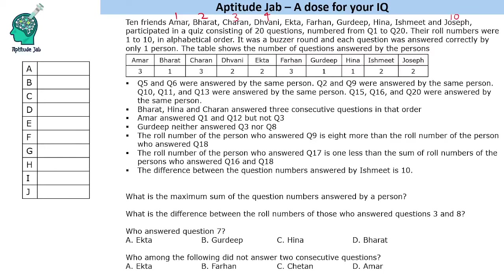Some information is presented: questions 5 and 6 were answered by the same person, 2 and 9 by the same person, and so on. Now, reading these statements, the only information we can directly fill in is that Amar answered questions 1 and 12, but not 3. So we fill 1 and 12 for Amar, meaning his third question can be something else.